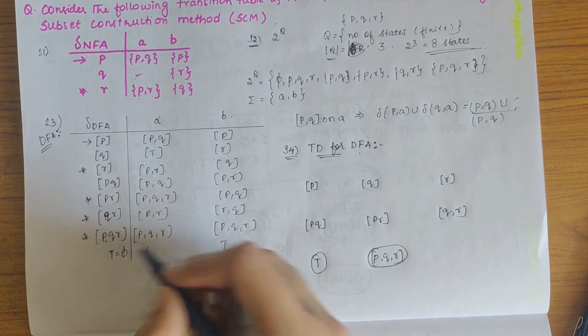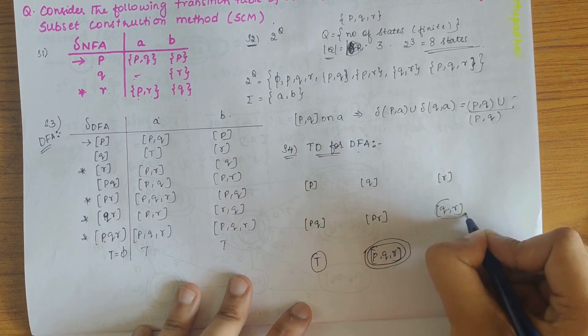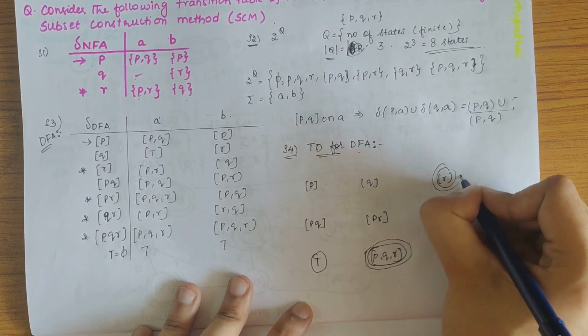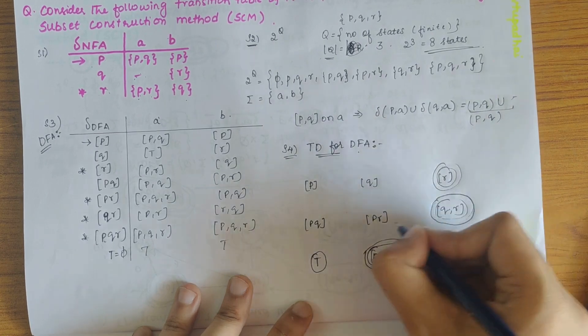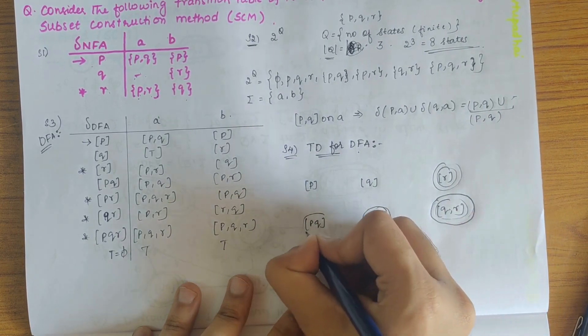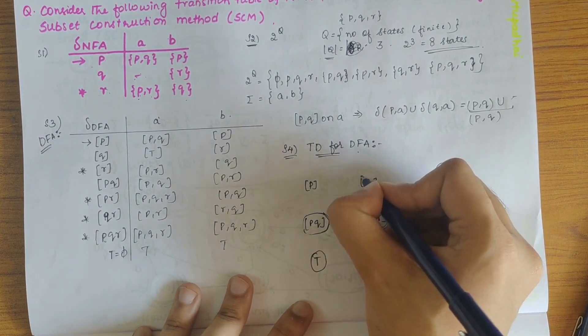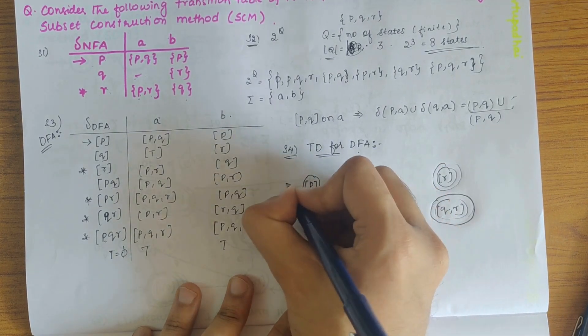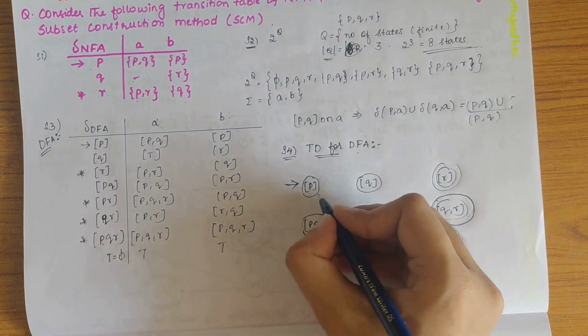So wherever there's r, we need to double circle it, representing it as the final state. And the start state is represented by arrow. So now let's define the transitions.